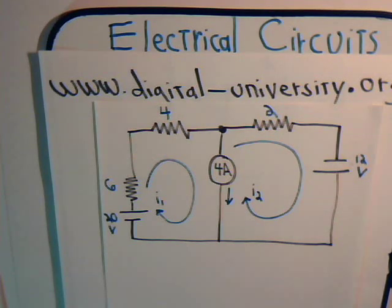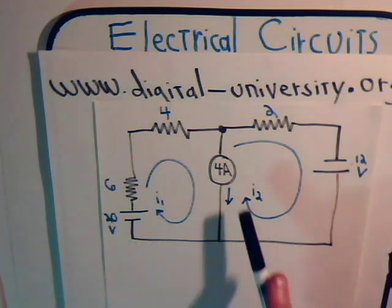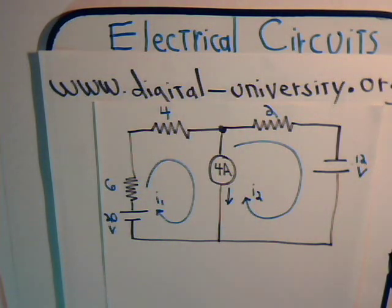This is video number 20 from digital-university.org where we are considering different types of techniques to analyze electrical circuits. In this problem we have another direct current circuit that has two voltage sources and a current source incorporated into it.